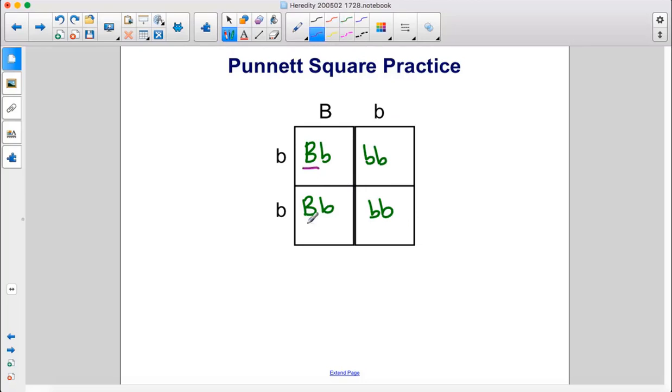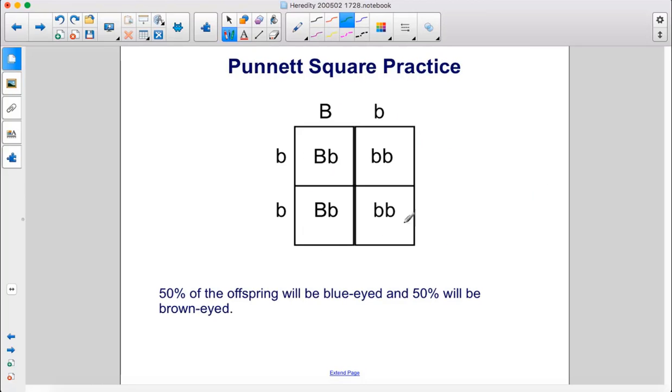So you can see that 50% of the children will have brown eyes and 50% will have blue eyes. Here is the completed square and you can see that 50% of the offspring will be blue-eyed and 50% will be brown-eyed.